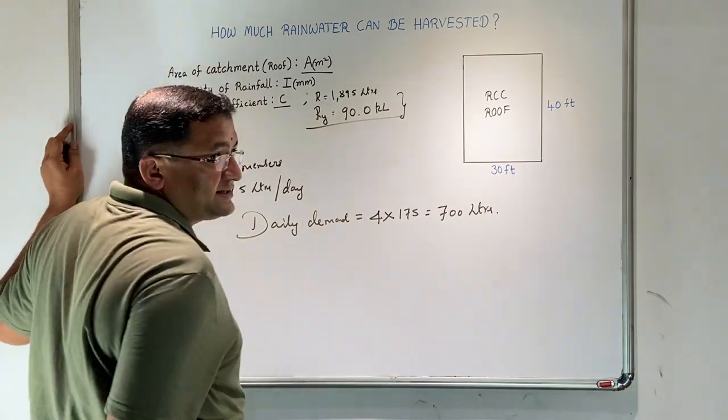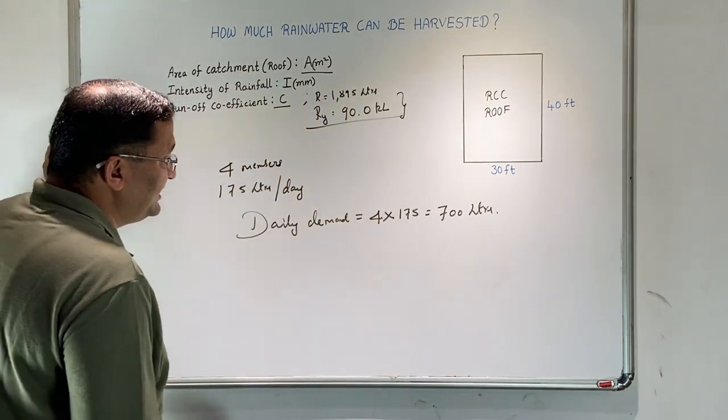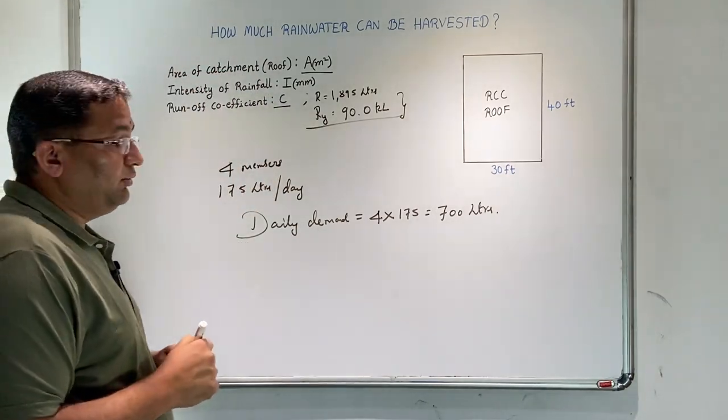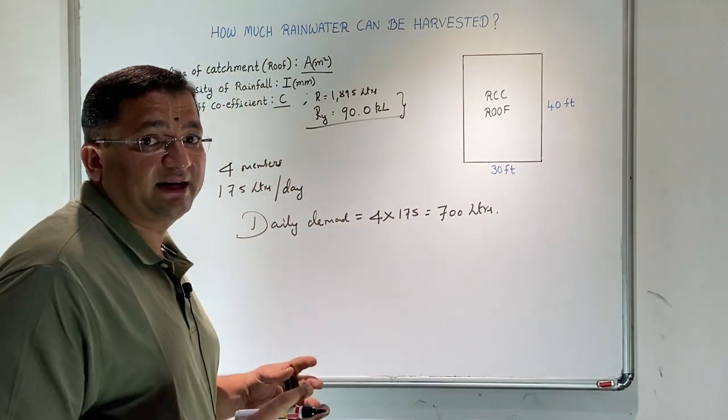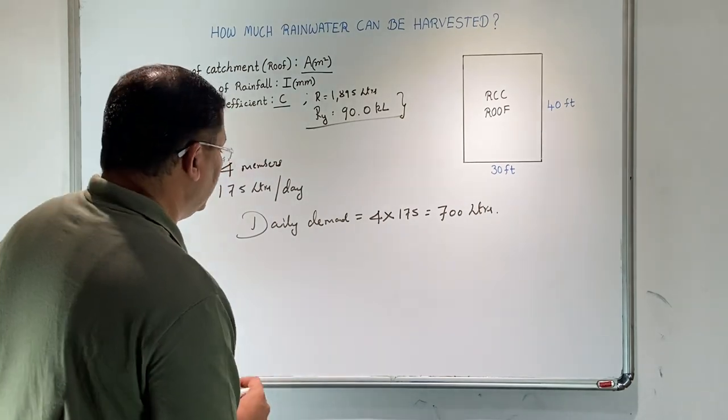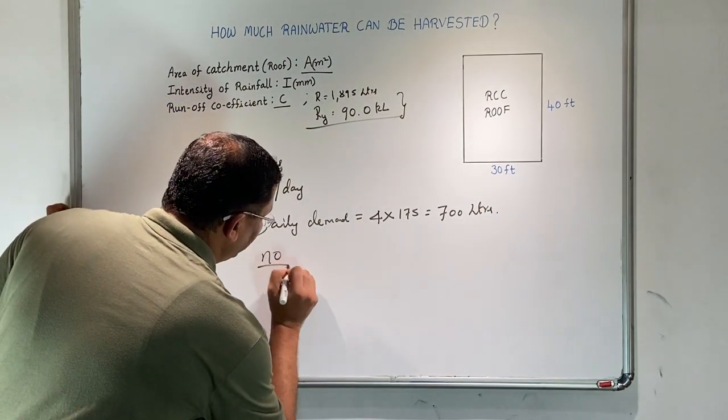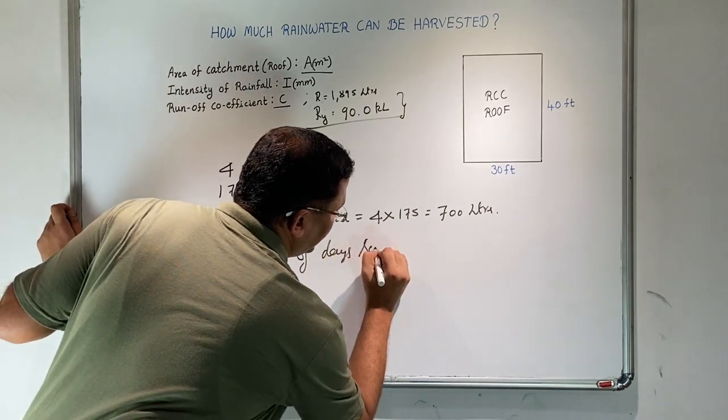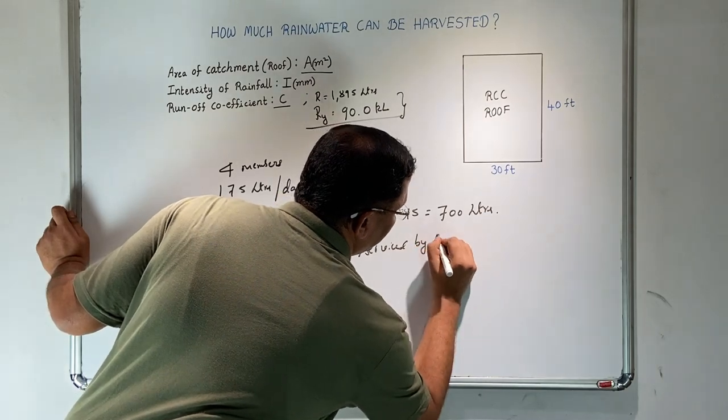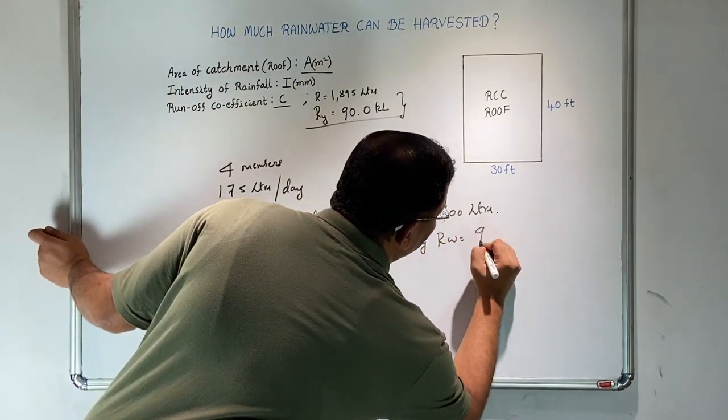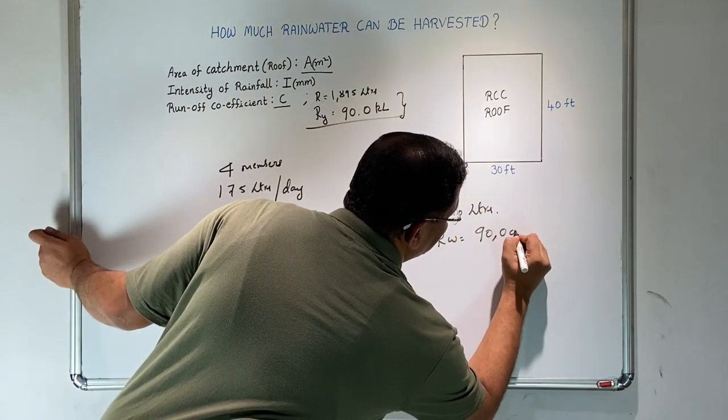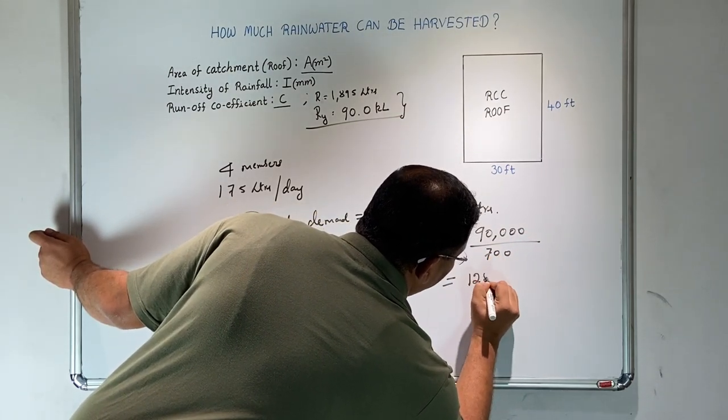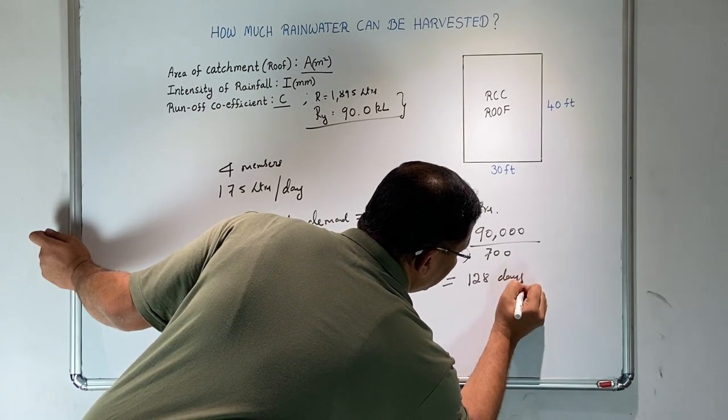The yearly rainfall is 90 kiloliters. The daily demand is 700 liters. Now with these numbers, we calculate how many days in a year we can thrive by rainwater. Number of days serviced by rainwater equals 90,000 divided by 700, that equals 128 days.